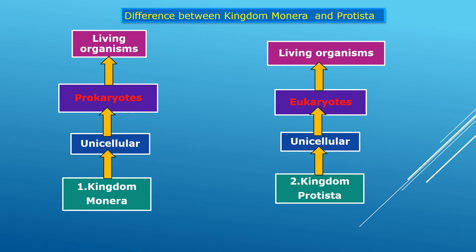Comparing kingdom Monera and kingdom Protista: kingdom Monera is prokaryotic — it does not contain a nucleus with bound cell organelles and has a simple structure. Kingdom Protista is eukaryotic — it contains a nucleus with bound cell organelles and has a complex structure. The next, third kingdom is kingdom Fungi.